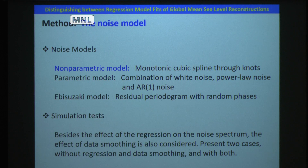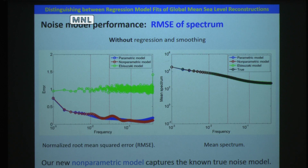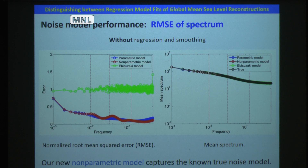Since data smoothing can also change noise features, the effect of data smoothing on noise estimation is included in the simulation test. Two simulations are conducted: one without regression and data smoothing, another with both. In the simulation test without regression and smoothing, the parametric model is the true noise model. Model performance is measured by normalized root mean square error, shown in the left-hand figure, and the mean spectrum is shown in the right-hand figure. The vertical red line is the spline knot of the nonparametric model.